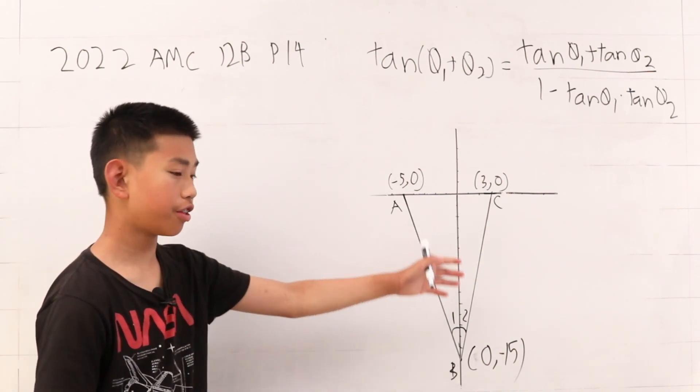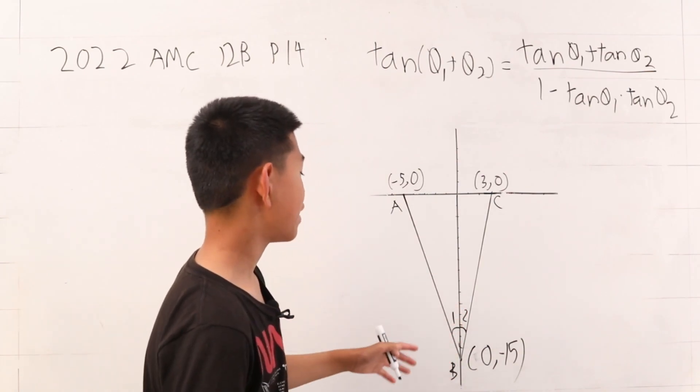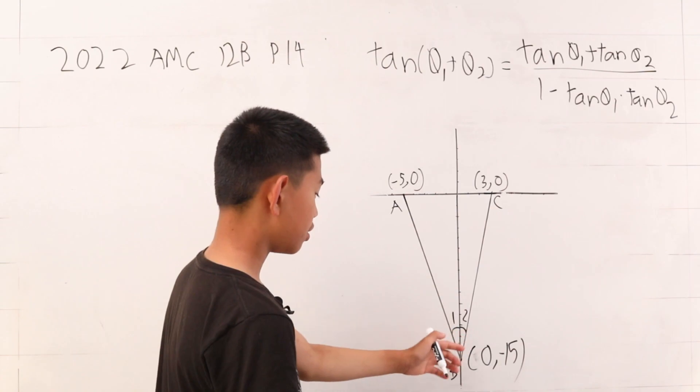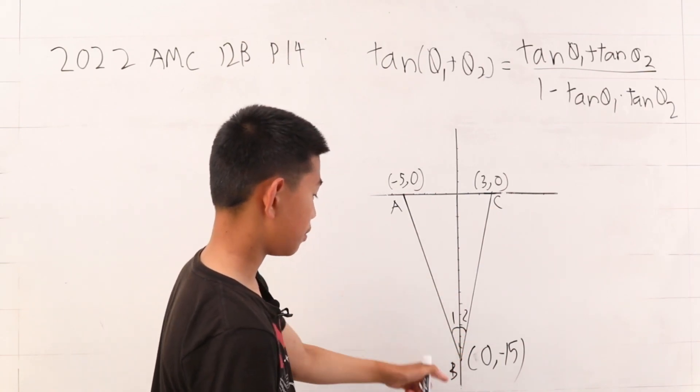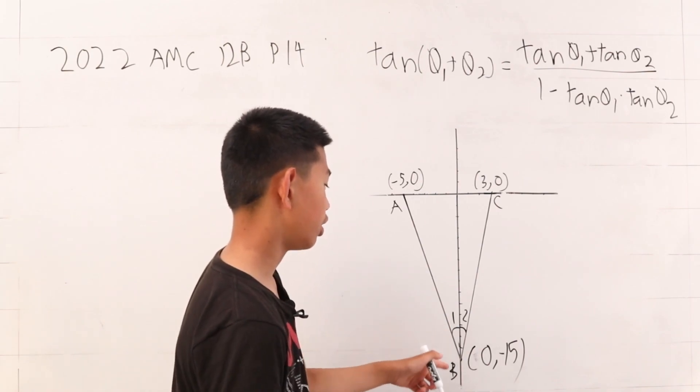Now, we have plotted the triangle with our coordinates and our A, B, and C. We see that the y-axis divides angle ABC to get two angles, let's just say angle 1 and angle 2.